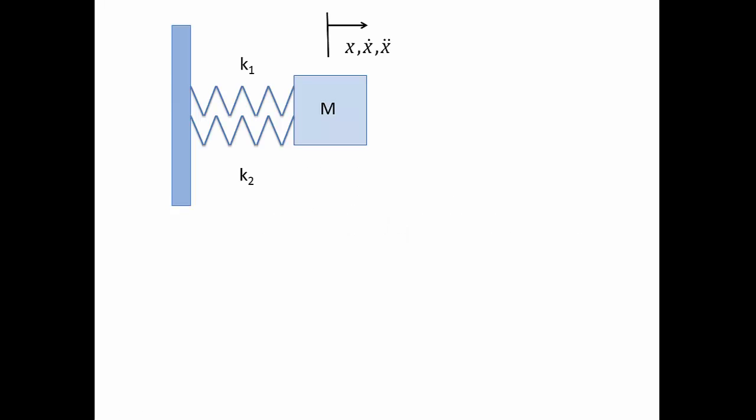The first one we're going to see is springs in parallel. Here is the setup. We have two springs here. For each of them, one side is connected to a fixed wall and the other side is connected to a mass. Geometrically, these two springs are side by side and we call them in parallel.